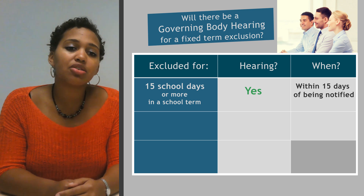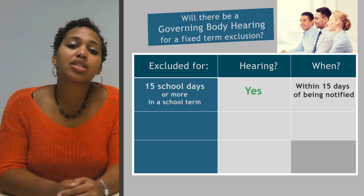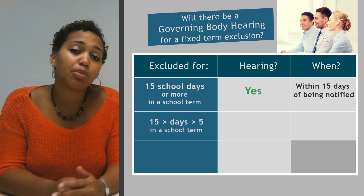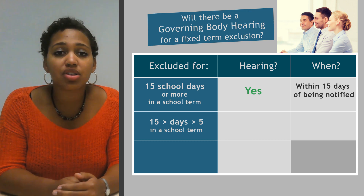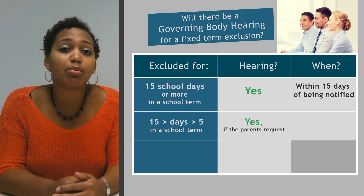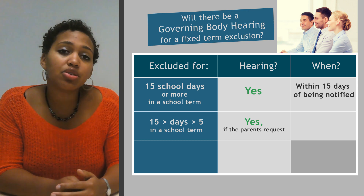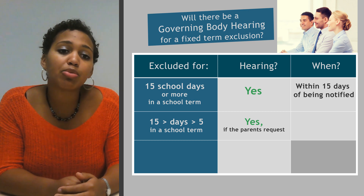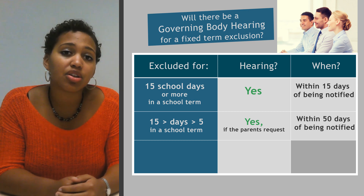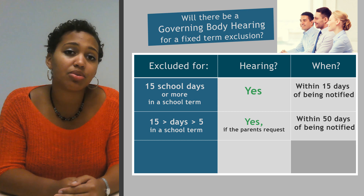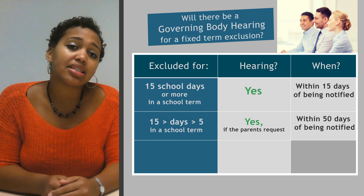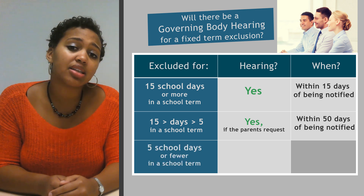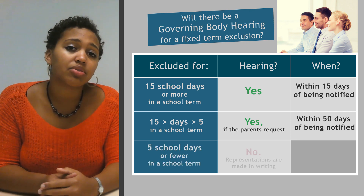If the pupil's exclusion means that they are excluded for less than 15 days but more than 5 days in a term, the parents of the child have the right to request a governing body meeting. If they do so, the governing body must meet to consider the decision within 50 days of receiving notice. If the total number of days a pupil is excluded is less than 5 days in a term, the governing body do not have to meet.